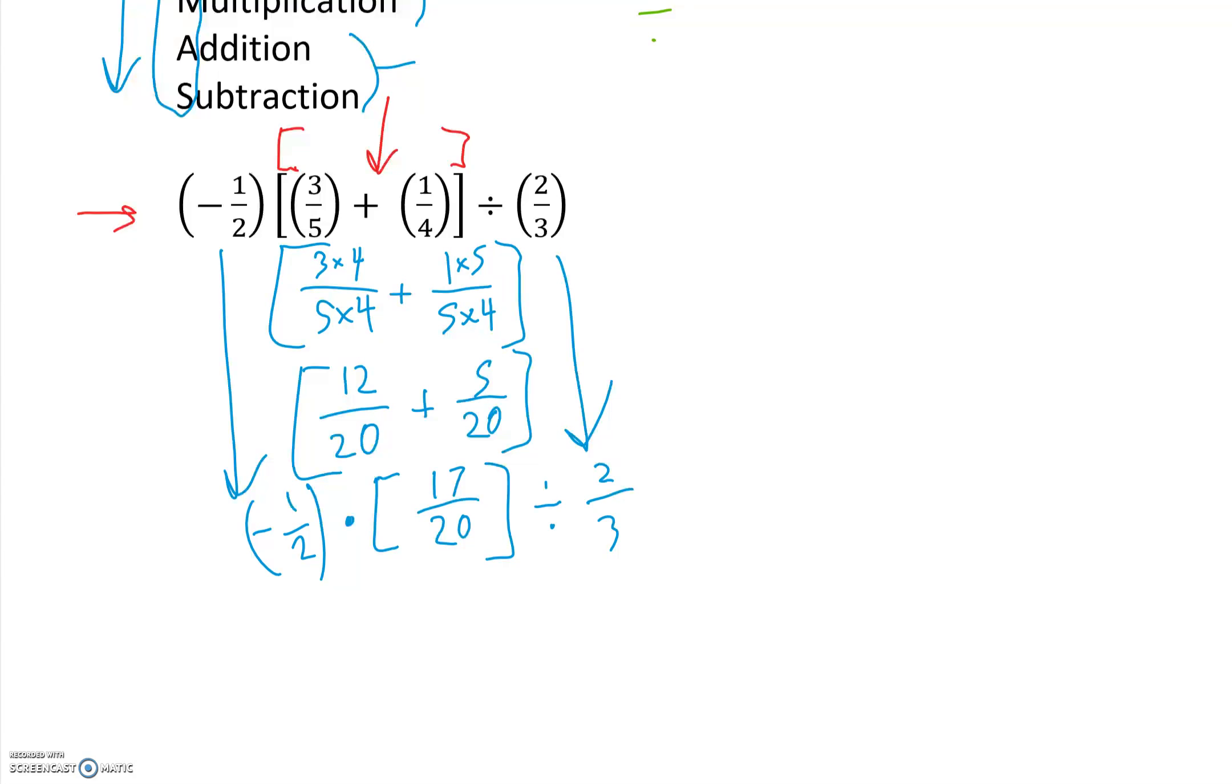Take a look at this. If we divide by 2 thirds, it's the same thing as if we multiplied by 3 over 2. If we flip the fraction, if we divide by a number, we can flip the fraction and multiply it by it. This is just a cool trick here. I'll write all this out again. Multiply it by 17 over 20.